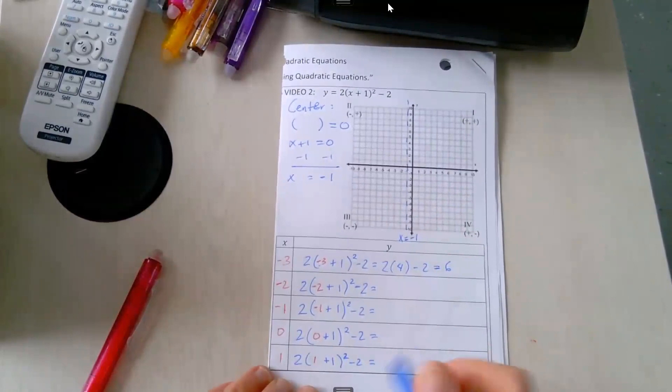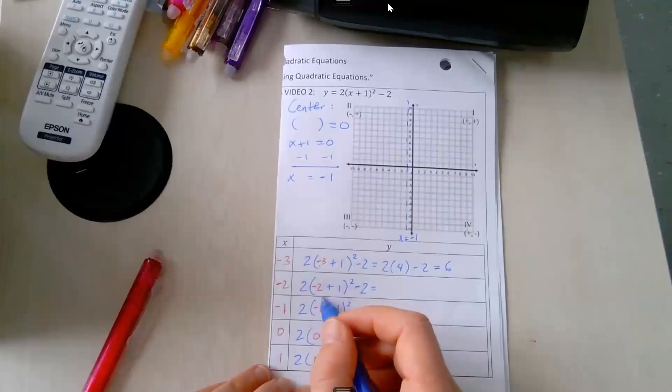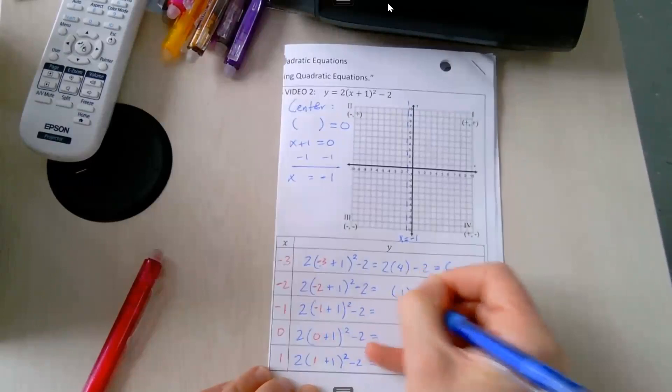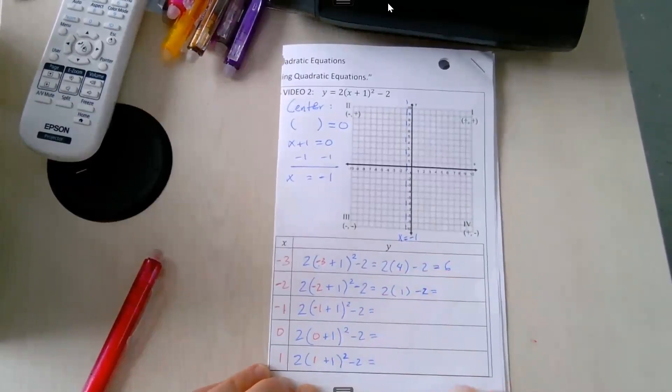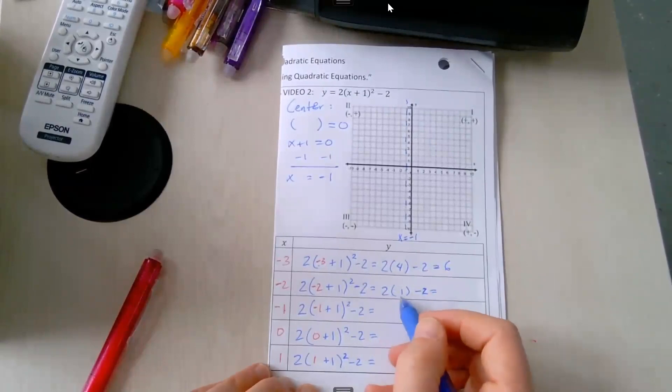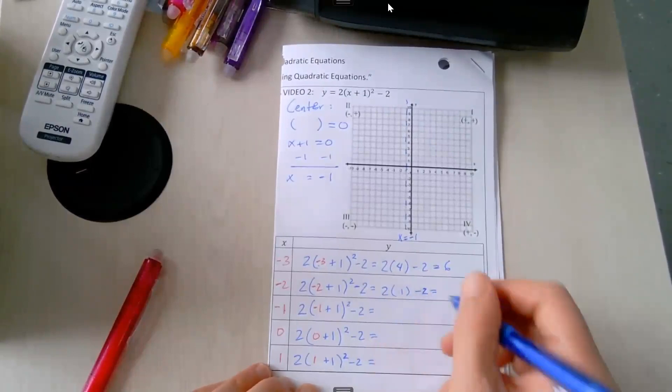Let's go again. Negative 2 plus 1 is negative 1. Negative 1 raised to the second power, negative 1 times negative 1 is positive 1. Now 2 times 1 is 2. 2 minus 2 is 0.